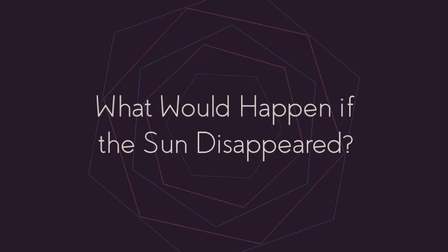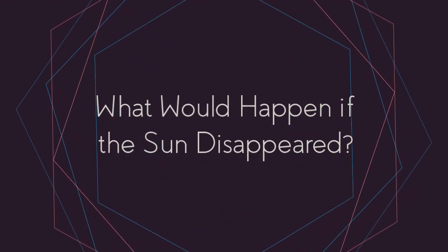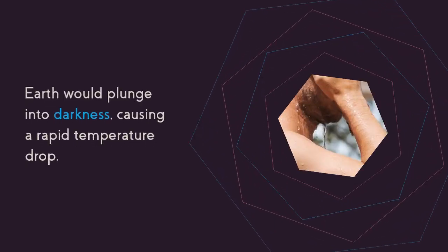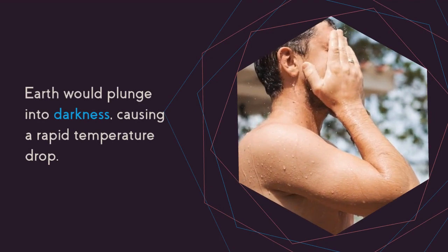What would happen if the sun disappeared? The sudden loss of the sun's gravitational pull would cause all the planets to fly off into space. Earth would plunge into darkness, causing rapid temperature drop.